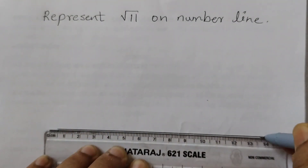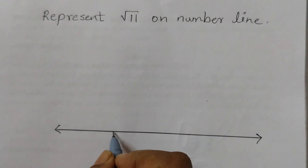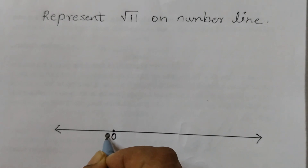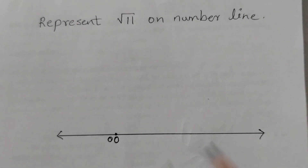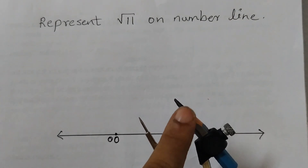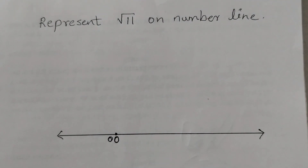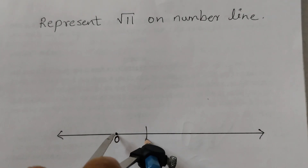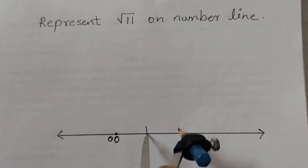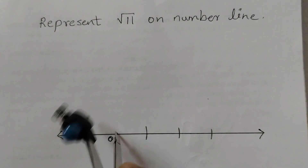First, take your ruler and draw a line of any length, draw arrowheads, and mark a point 0 here. This is point O. Now take your compass to any length — that will be our unit length. You don't have to measure it, you can take any length. Keep the metal point here and cut 3 arcs from this point: 1, 2, 3.